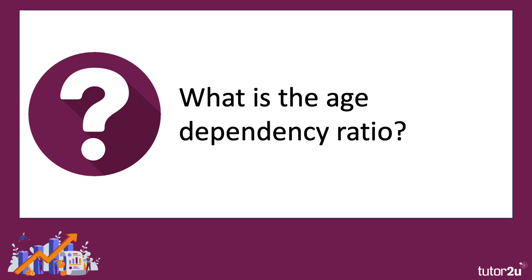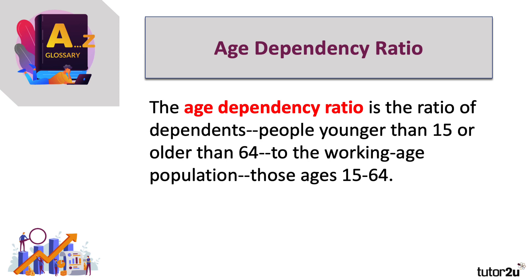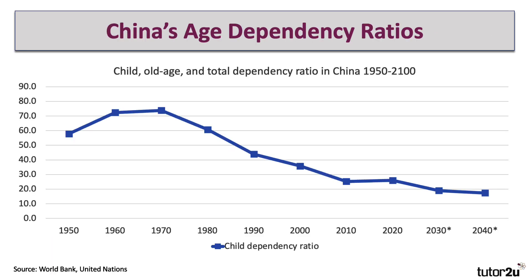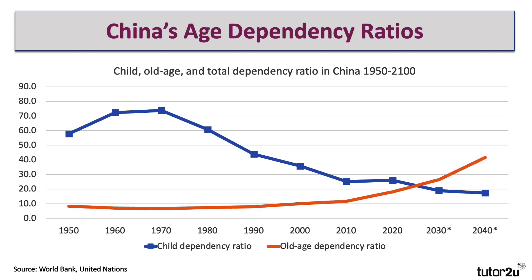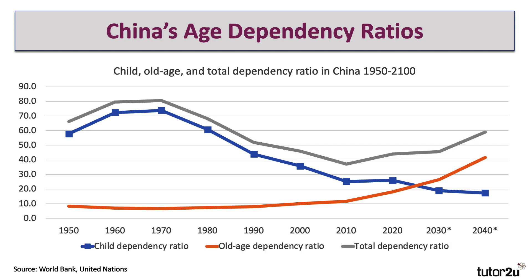This chart allows us to see how the falling birth rate and rising life expectancy is changing the age composition of China's population. There's a key concept called the age dependency ratio — the ratio of dependents (people younger than 15 or older than 64) to people of working age (those aged 16 to 64). China's child dependency ratio — the ratio of those aged 15 or under — has been falling. The old age dependency ratio is now rising, and if you add the two together you get the total dependency ratio, which is climbing from just under 40% in 2010 to closer to 60% in 2040 by estimates.